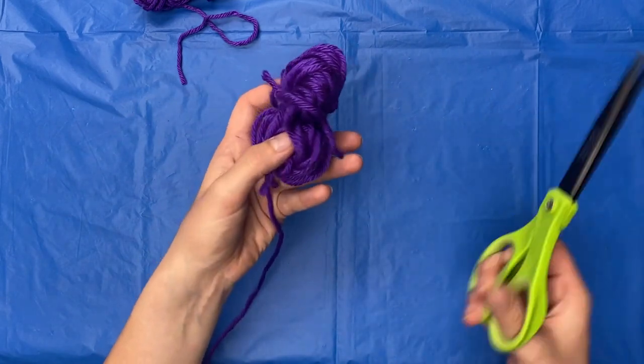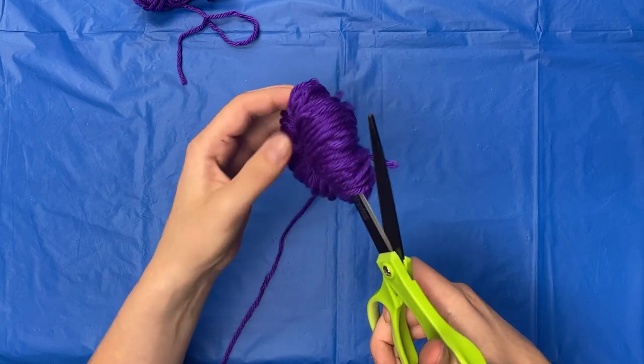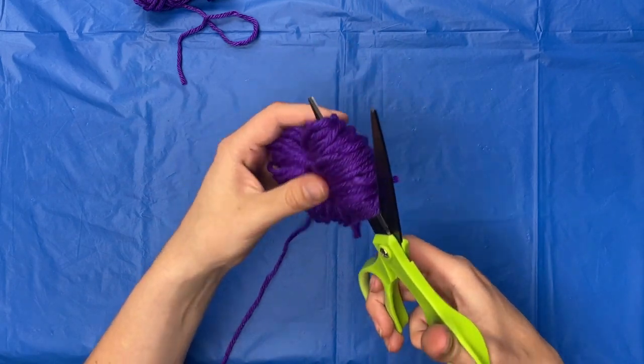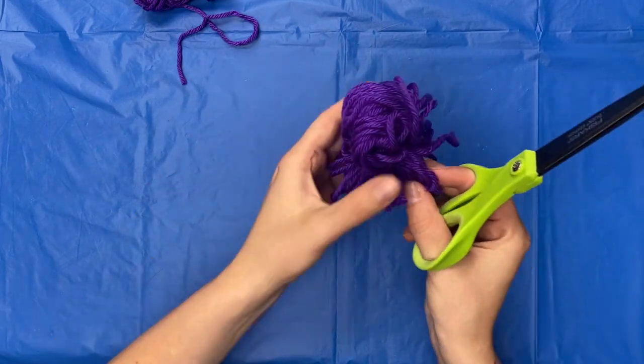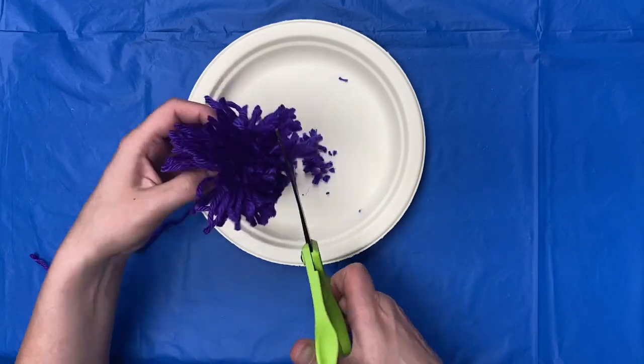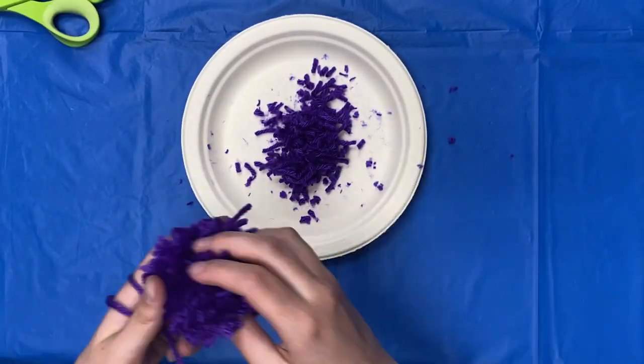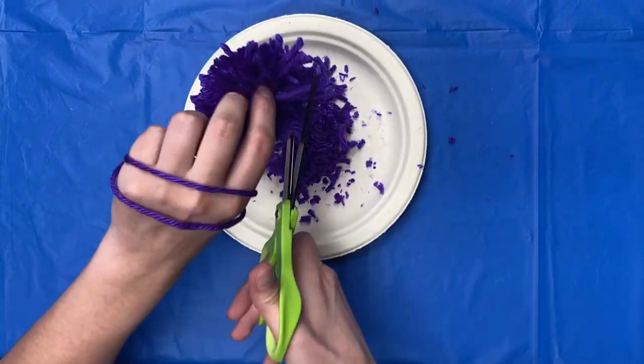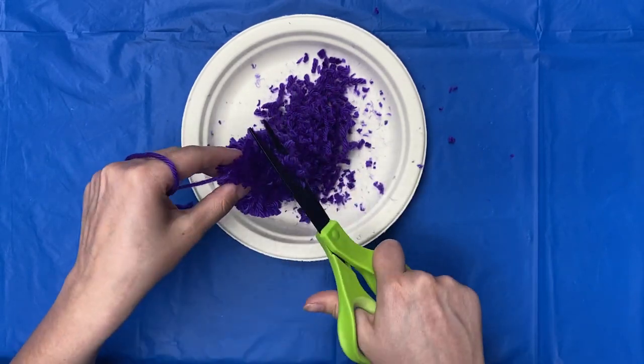Now place your scissors in between the loops and cut it. Now you want to trim the outside so it's nice and short. I would recommend doing this over a garbage can.